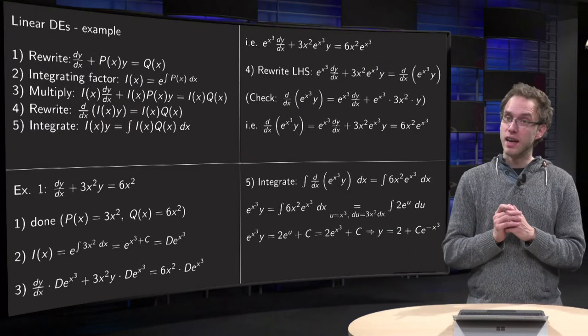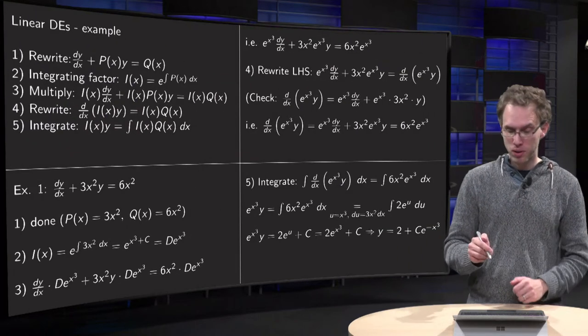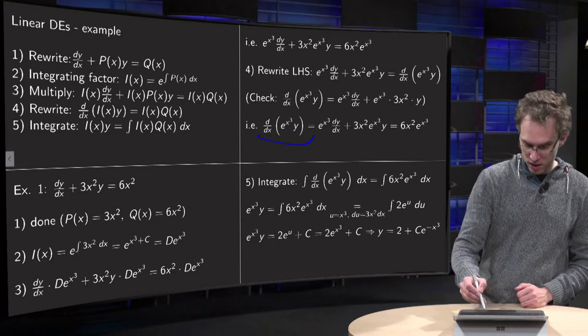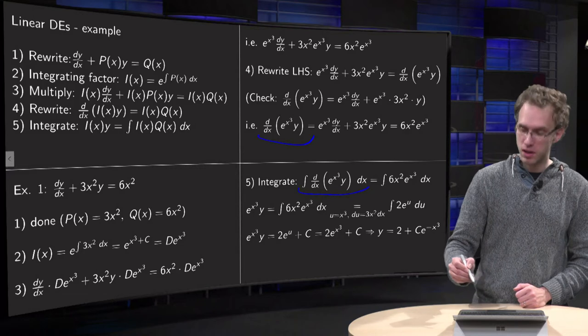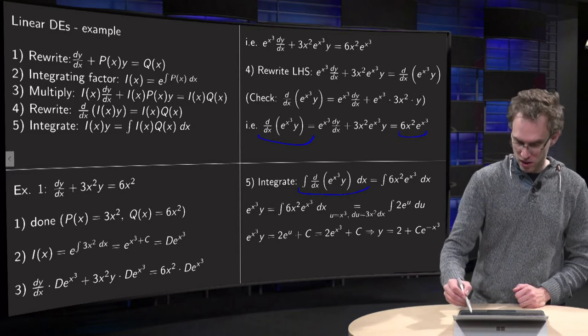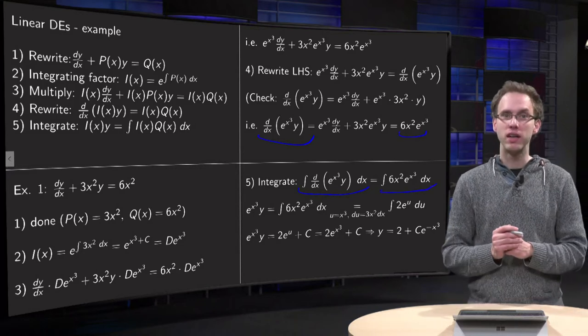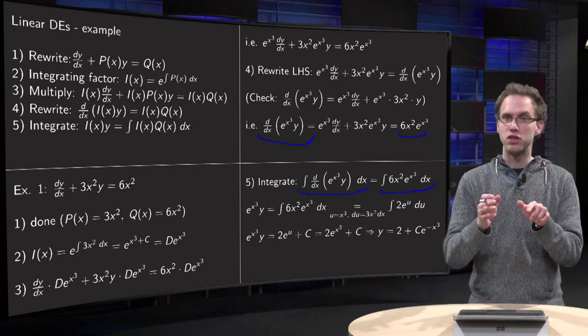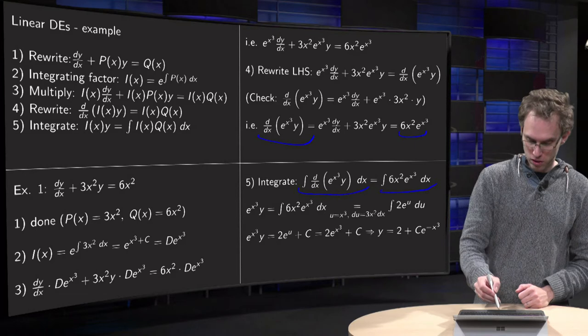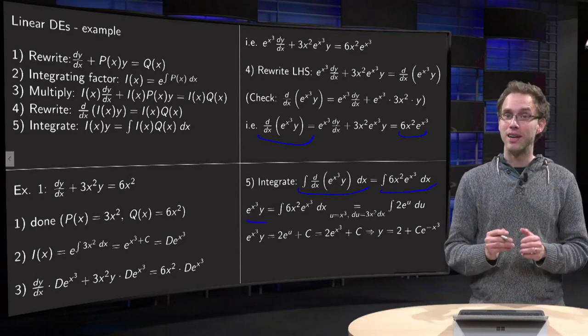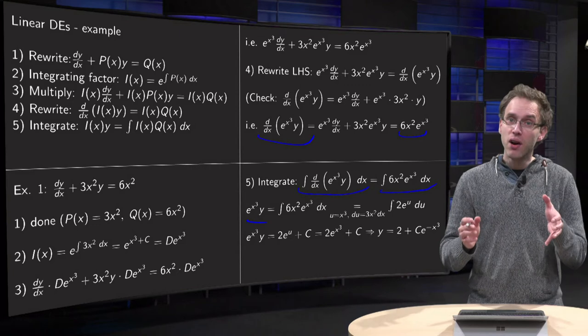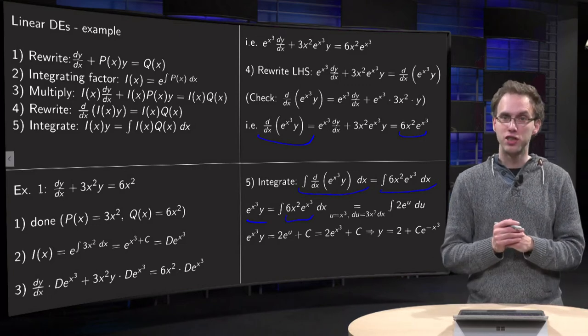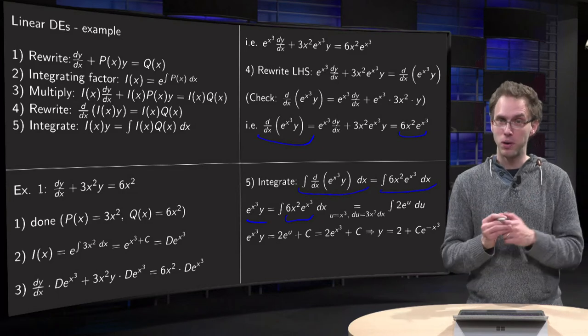Then step 5, we integrate left and right with respect to x. So we integrate the left hand side over here with respect to x, and we integrate the right hand side over here with respect to x. While on the left hand side we differentiate something and then we integrate, so we just get e to the power x³ times y. And on the right hand side we now only have x's, so we have to integrate the function 6x² times e to the power x³ with respect to x.